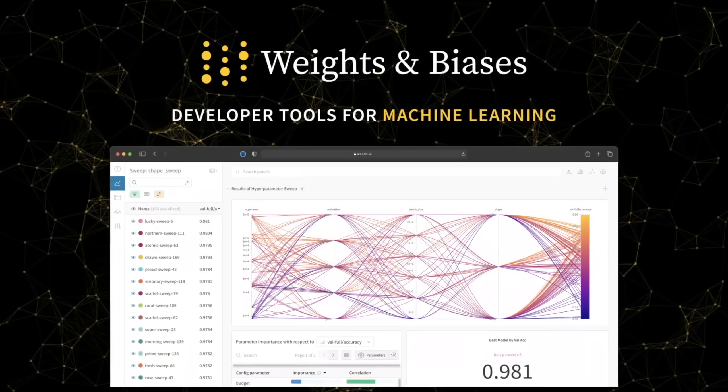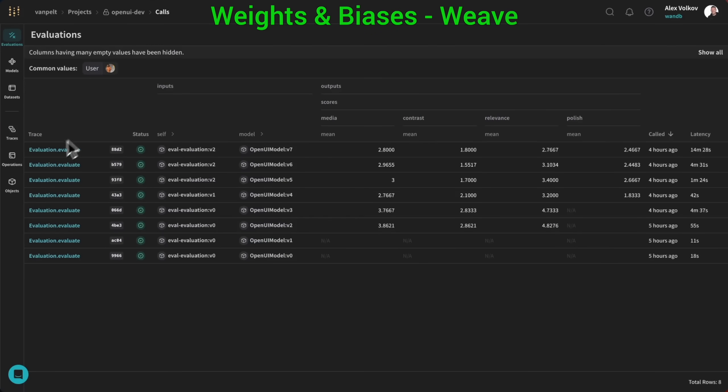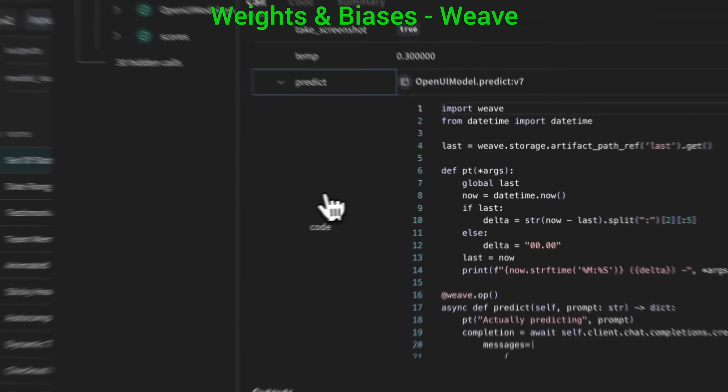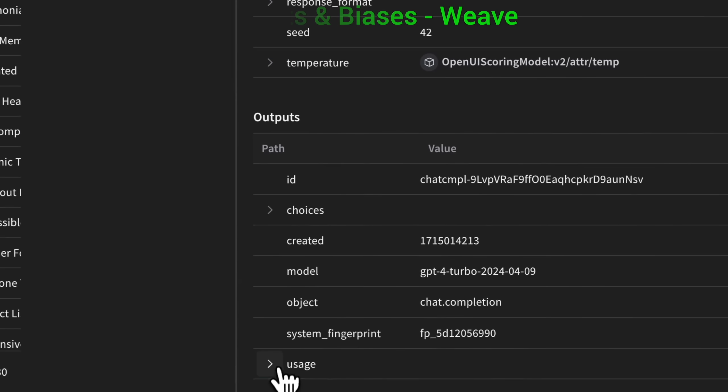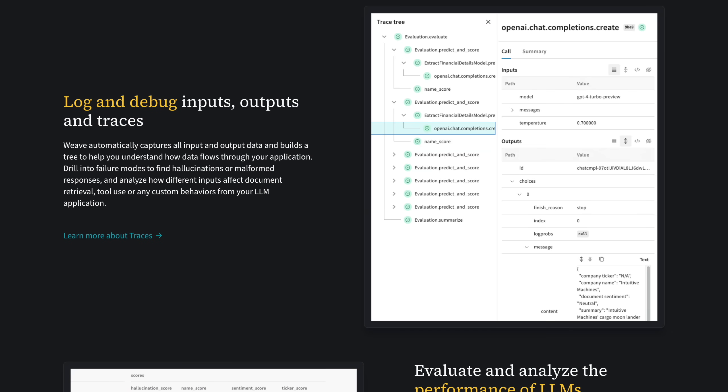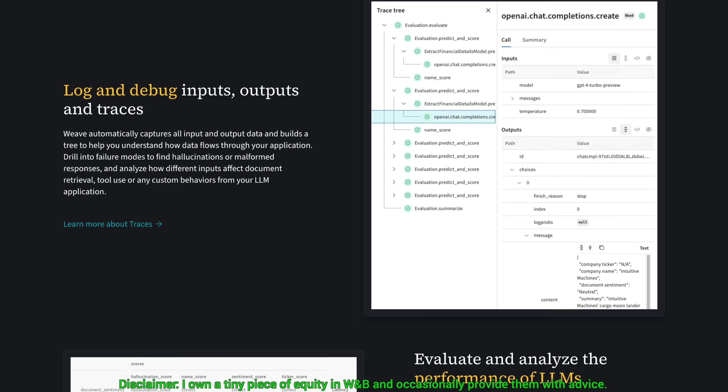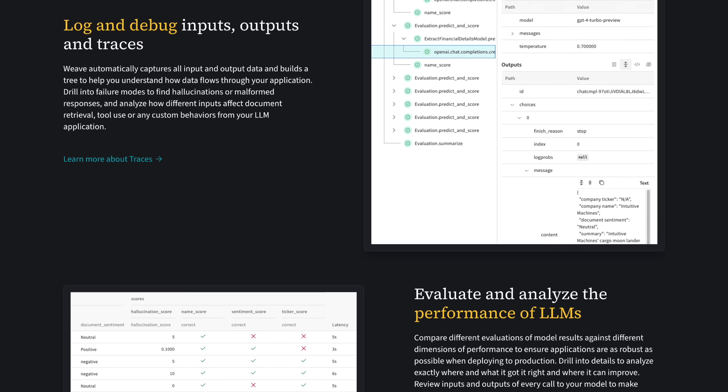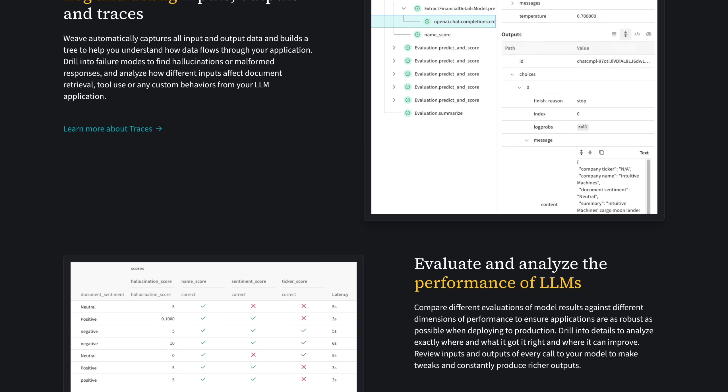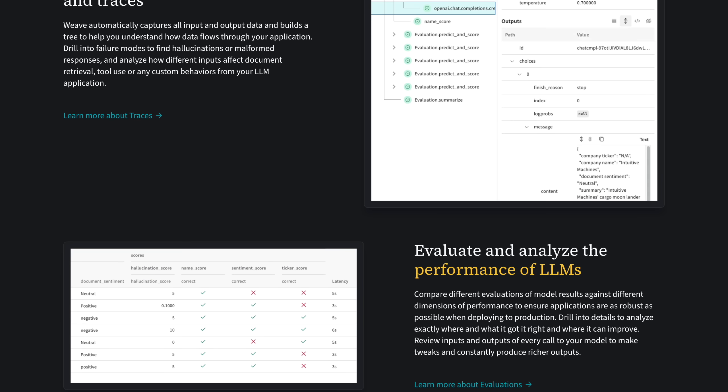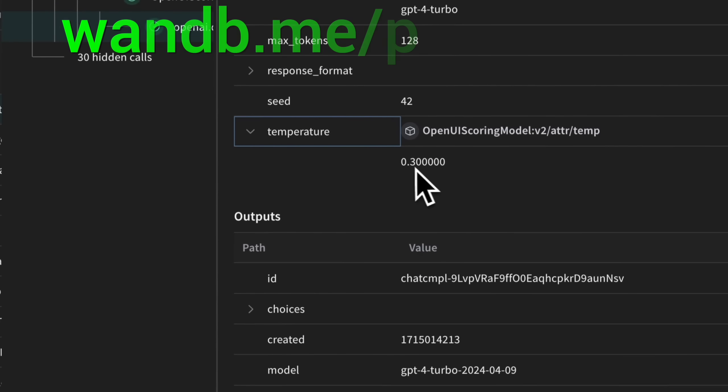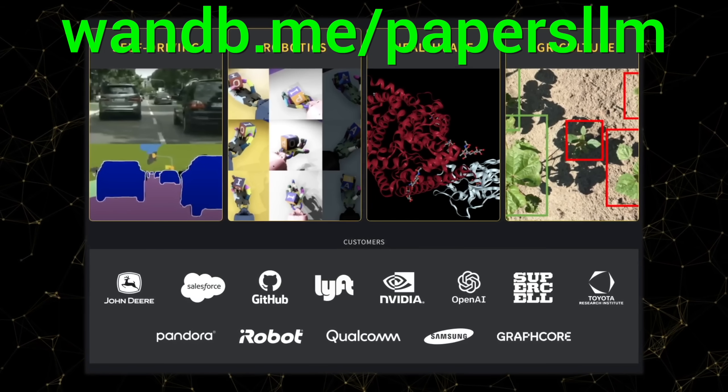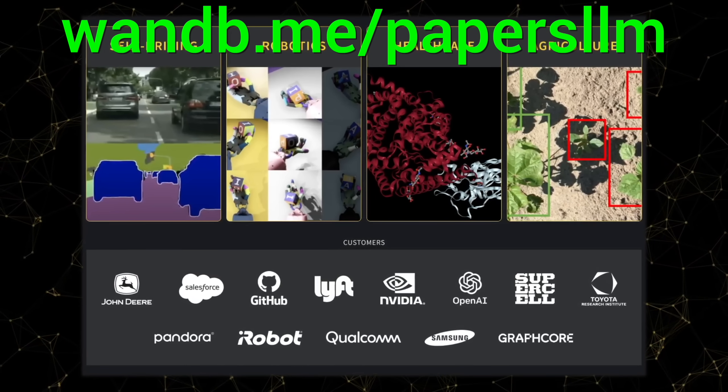We need new tools for the era of LLMs, and weights and biases now has Weave, a lightweight toolkit to confidently iterate on LLM applications, use traces to debug how data flows through each step of your app, and use evaluations to measure your progress. It is the best! Try it out now at wnb.me slash papersllm, or click the link in the description below!